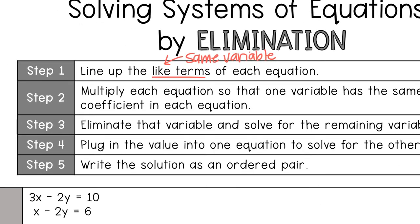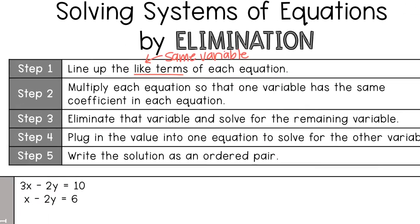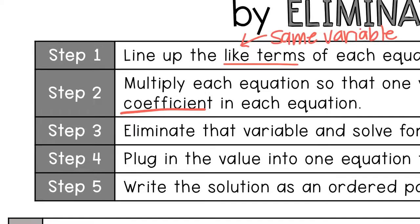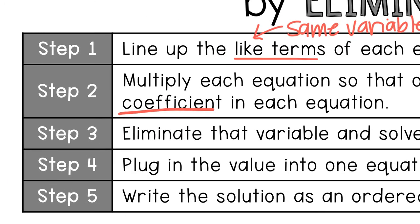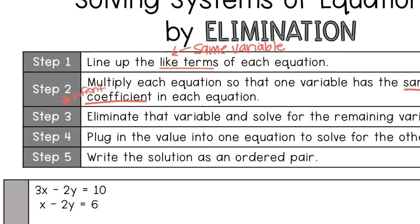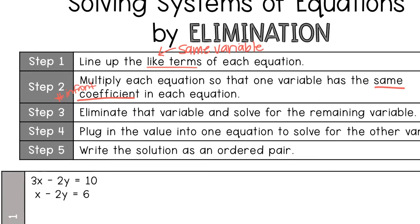Step two is to multiply each equation so that one variable has the same coefficient. The coefficient is the number in front — so if you had something like 2x, 2 is the coefficient. What we're trying to do is see if in both equations, one of the variables will have the same coefficient.